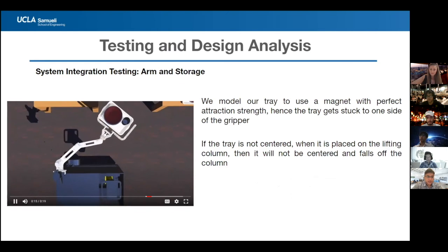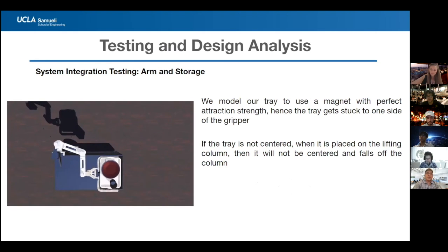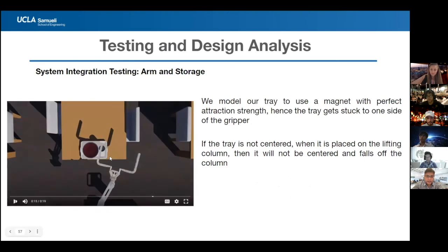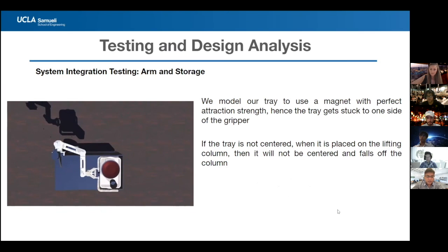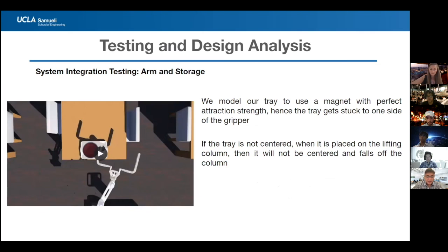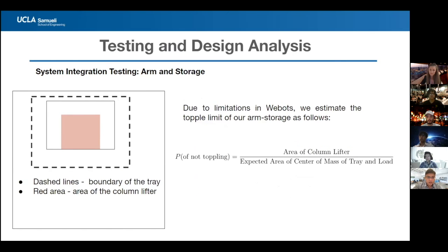Potential errors between arm and storage were identified: if the arm is not properly aligned, one electromagnet side will exert more force than the other, causing issues at the column lifter and potential tray tipping. Due to time constraints, tipping points were modeled probabilistically using the ratio of the column lifter area to the expected center-of-mass area.